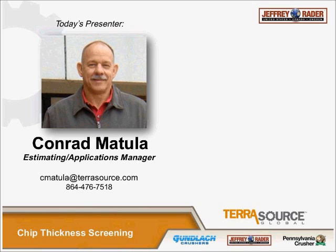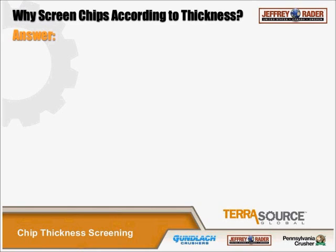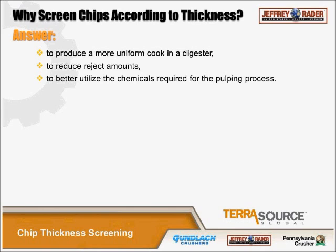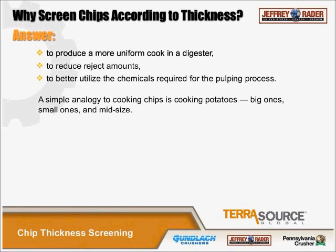Why screen chips according to thickness? Uniform chips provide a more uniform pulp, which improves yield, quality, and economy of the pulping process. Fewer oversized chips in the cook means less uncooked or partially cooked rejects, which must be reintroduced into the process. When these rejects are reintroduced into the digester, they take up room and use more chemicals. A 50% reduction in rejects results in large savings to the pulp mill.